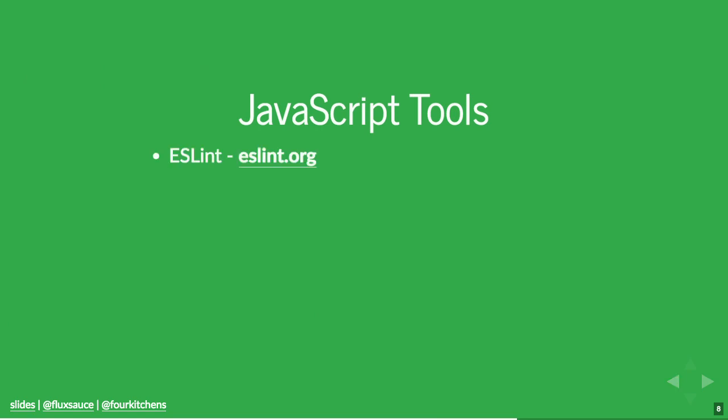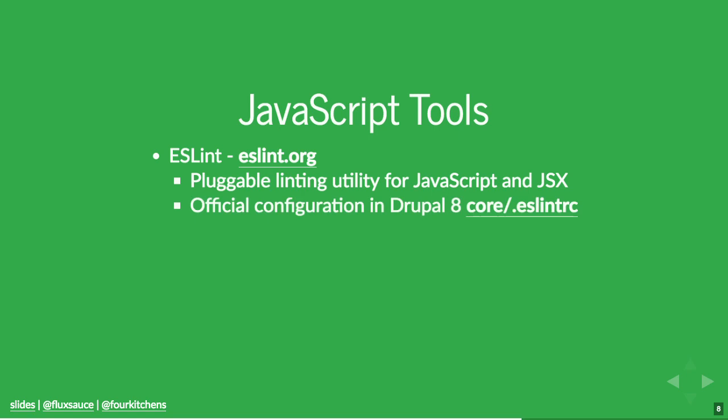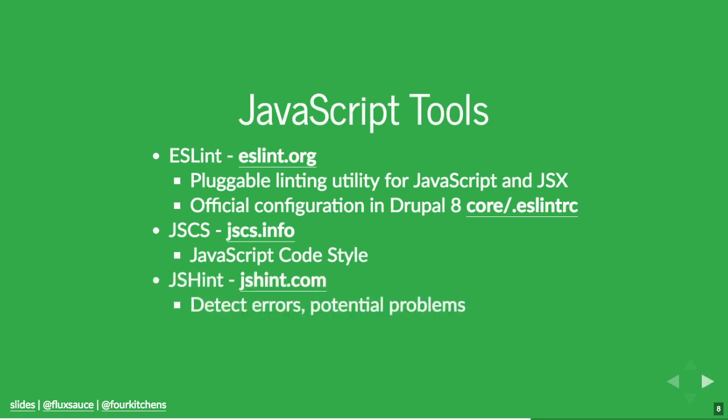JavaScript tools: ESLint is available from eslint.org. There's a definition within Drupal 8 core that — similar to Coder — those standards and configuration apply to both 7 and 8. It's a pluggable linting utility for JavaScript — make sure it functions and adheres to coding standards and best practices. JSCS is JavaScript code style and does exactly that. JSHint gets a little deeper and detects errors and potential problems. There's some community infighting about whether ESLint or JSHint is better and why they don't merge — they take slightly different approaches. Drupal 8 core has an ESLint configuration, so take that as you may.